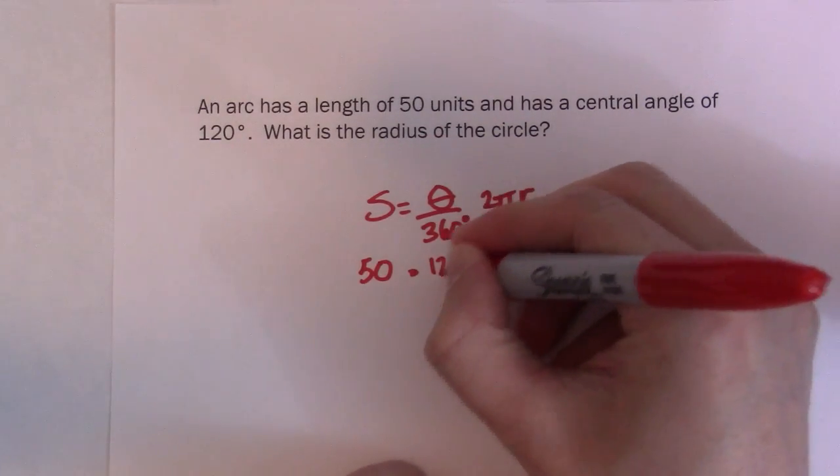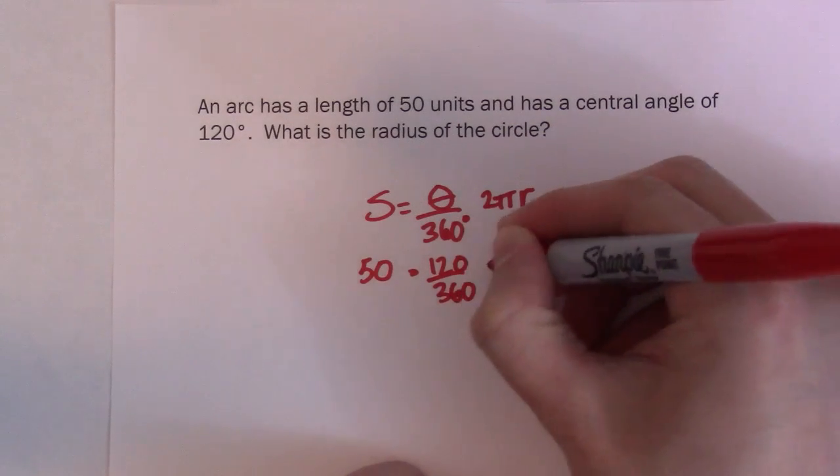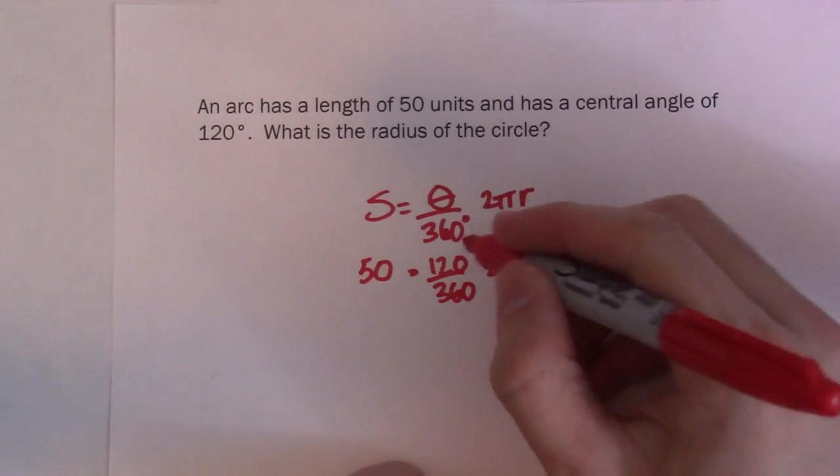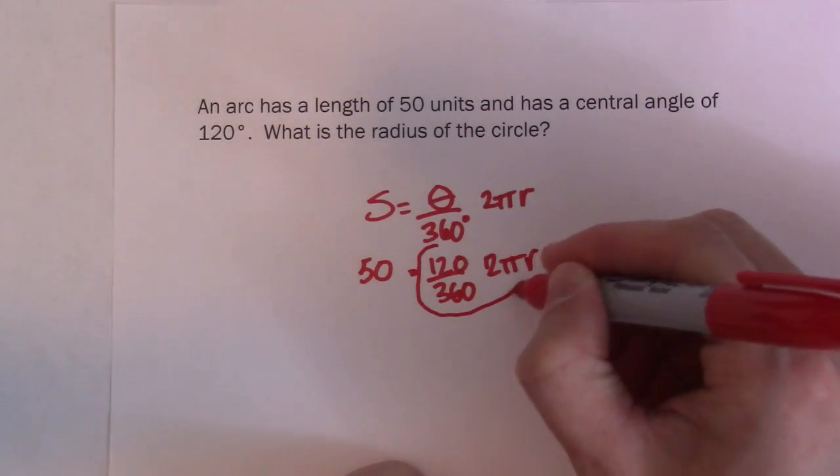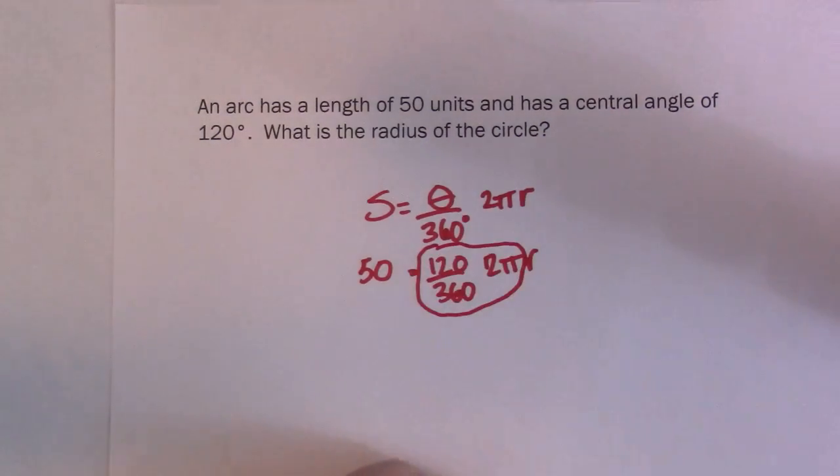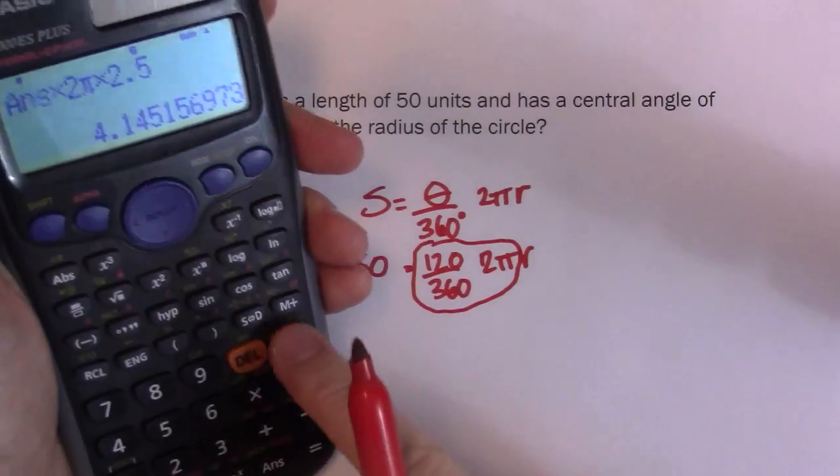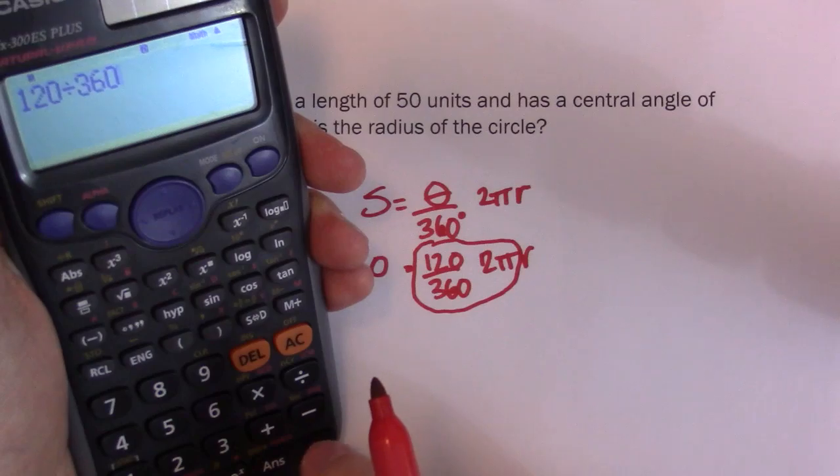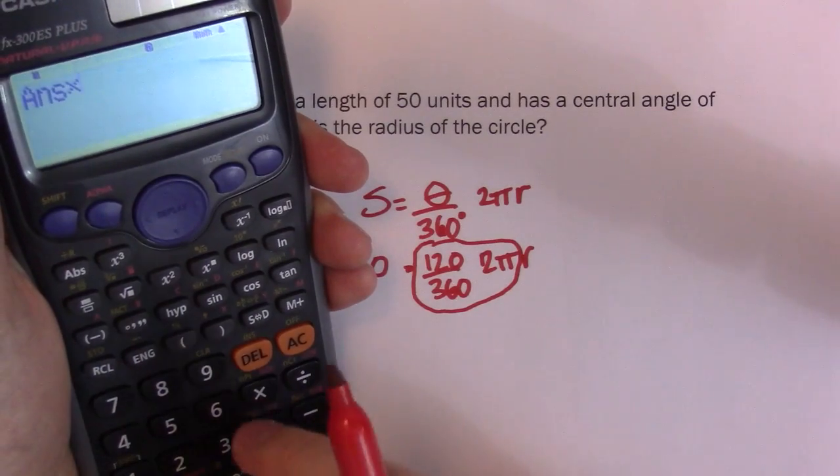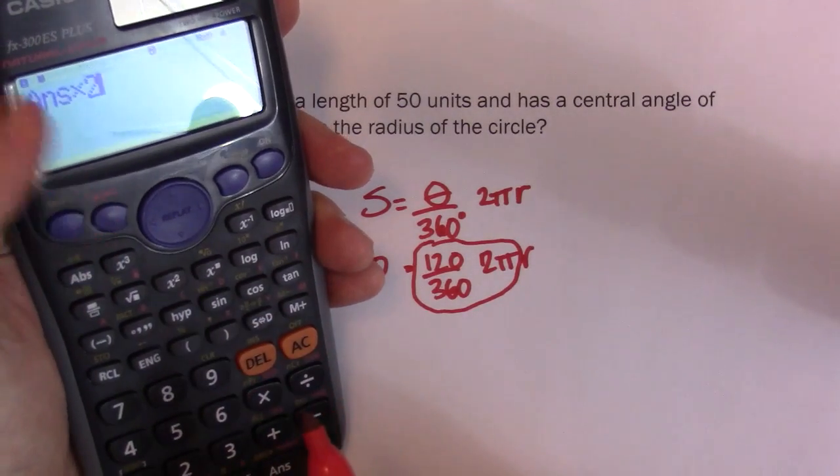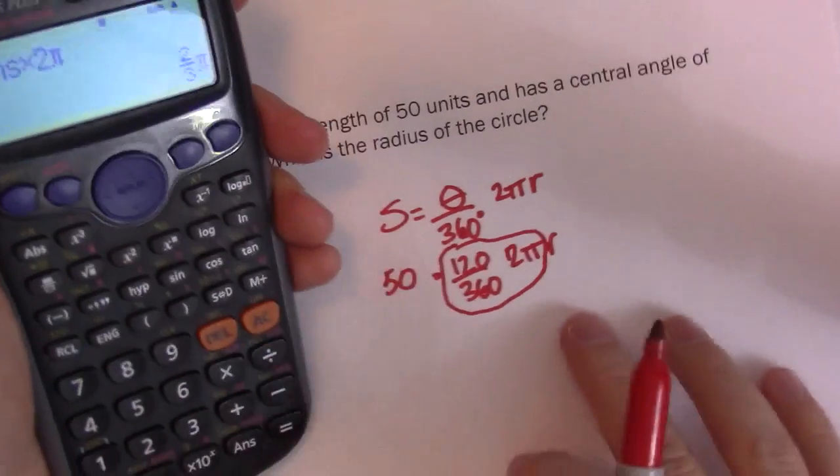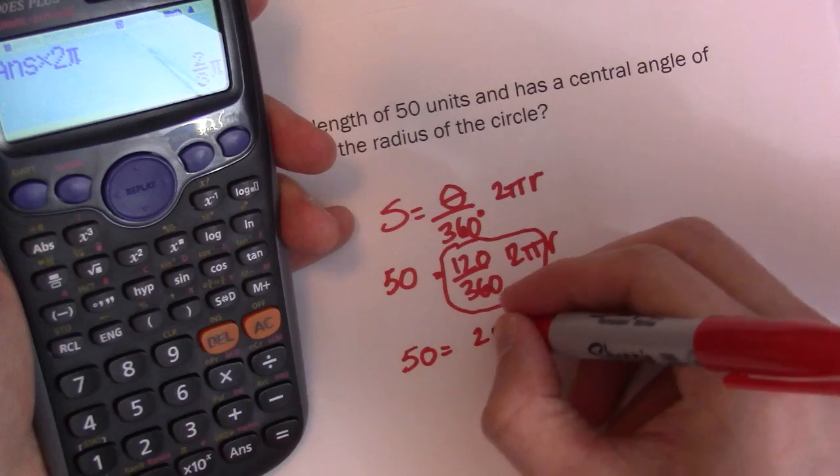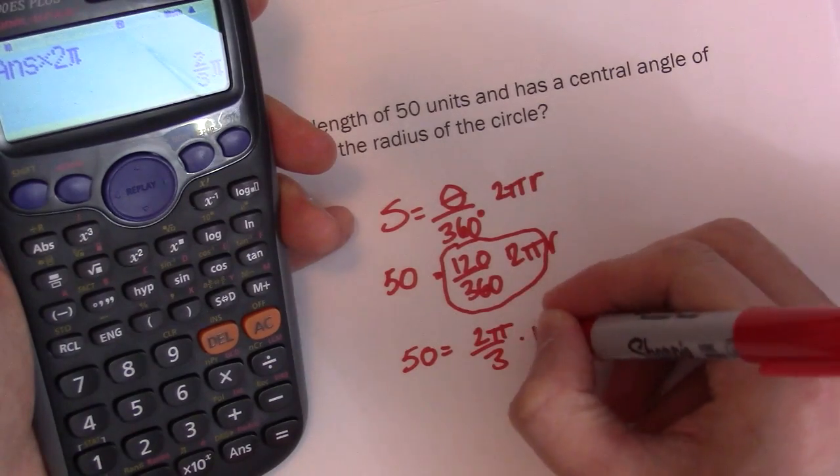So 50 equals 120 over 360 times 2 pi r. So we're looking for the r this time. So what I'm going to do is I'm going to work out this part right here. So I'm going to go 120 divided by 360. So 120 divided by 360, then I'm going to times that by 2 pi. So that gives me 50 equals 2 pi over 3 times r.